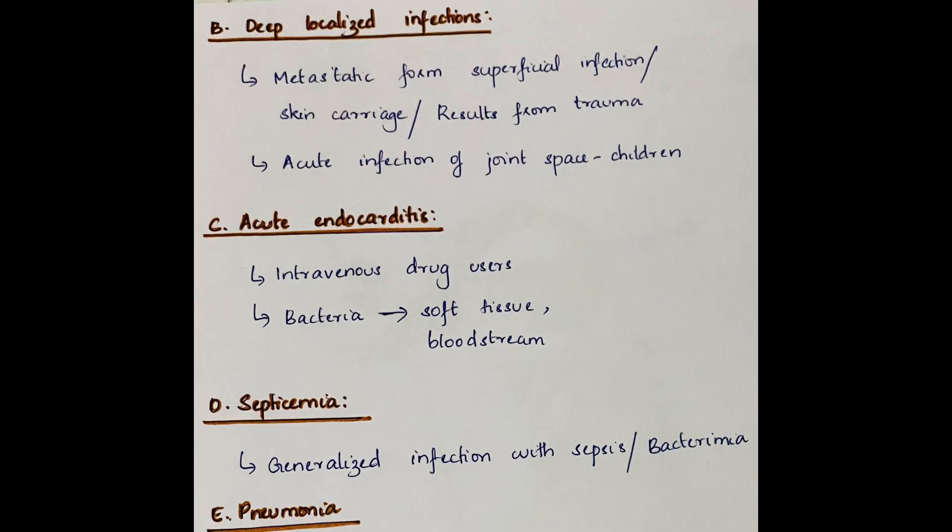Deep localized infections. Metastatic from superficial infections or skin carriage or may result from trauma. Acute infection of joint space in children. Acute endocarditis, generally associated with intravenous drug use. Bacteria can be introduced into soft tissue and the bloodstream.